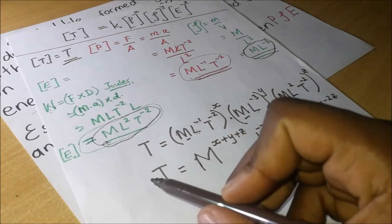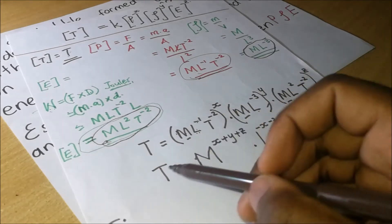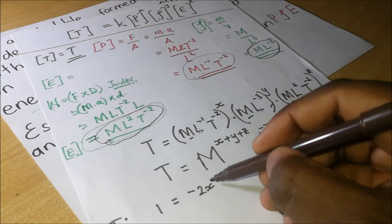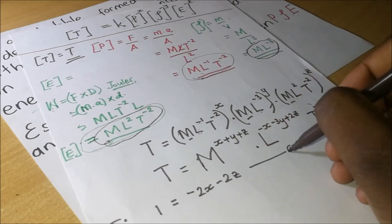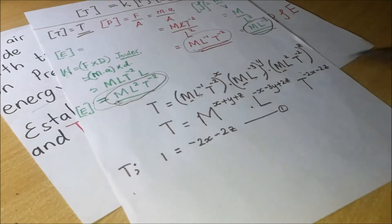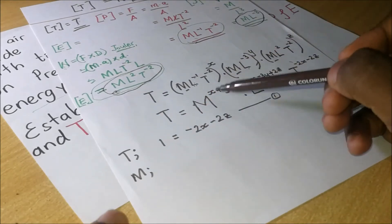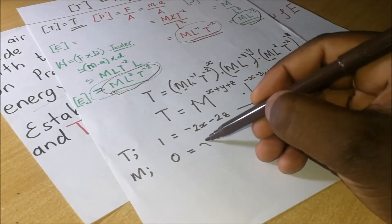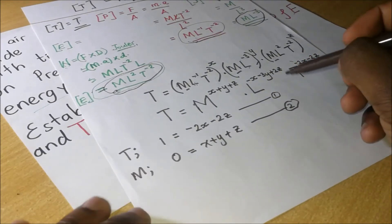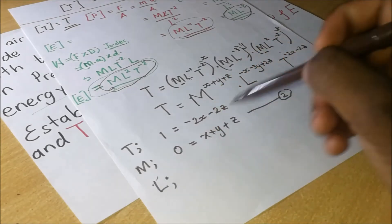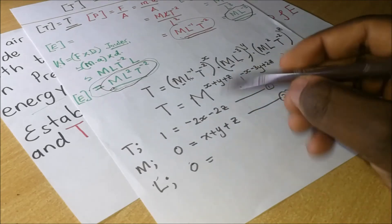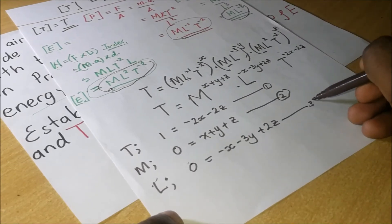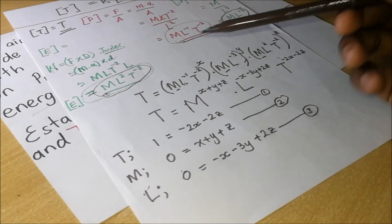We now equate powers on both sides. Equating powers of T: 1 = −2x − 2z (Equation 1). Equating powers of M: 0 = x + y + z (Equation 2). Equating powers of L: 0 = −x − 3y + 2z (Equation 3).